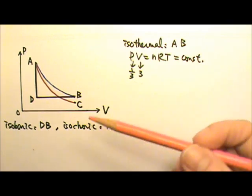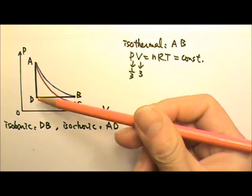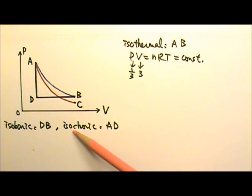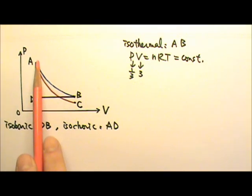For isobaric, the pressure is a constant. So it's D to B or B to D. Isochoric means volume is a constant. So it's either A to D or D to A.